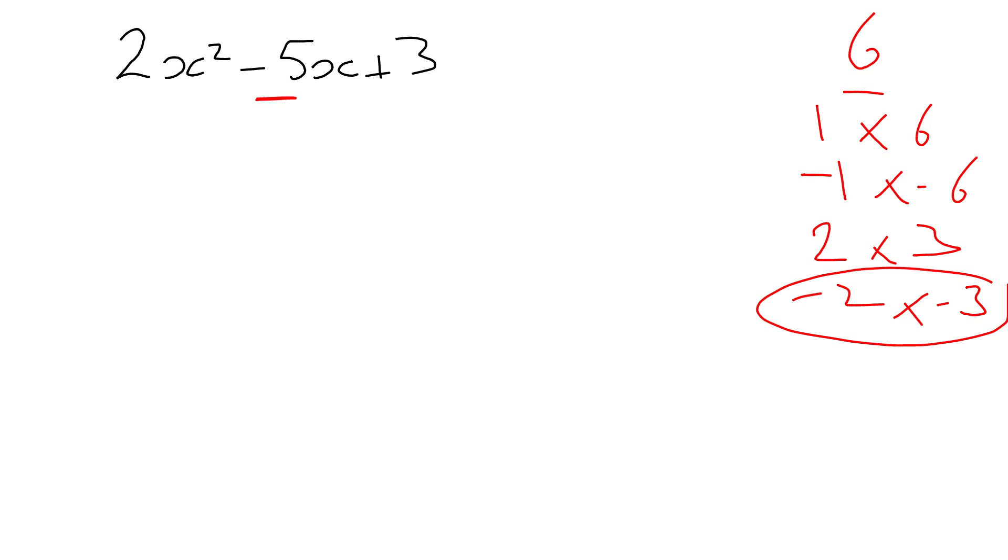So, step 3, we're going to use those values to rewrite the whole of this term. So, we've got 2x-squared and that's going to be minus 2x and a minus 3x plus 3.